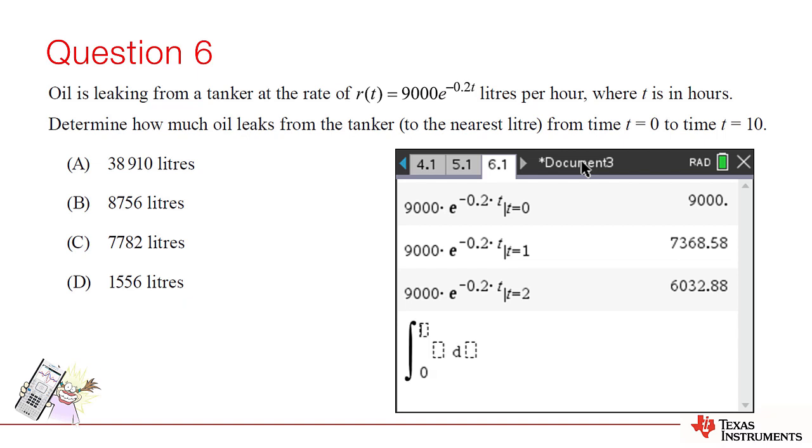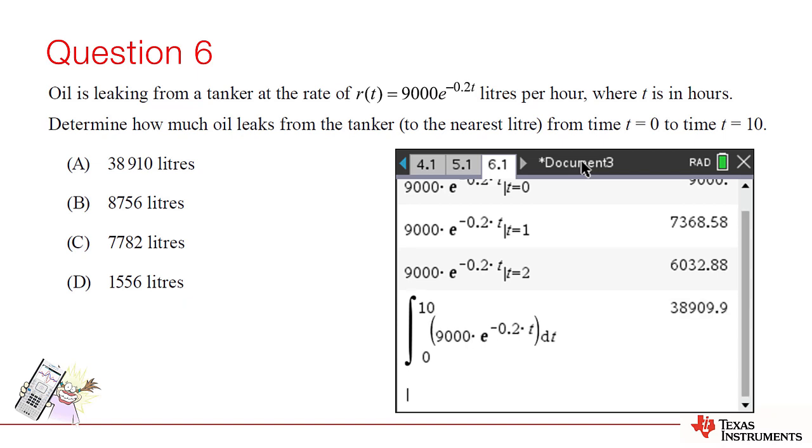Of course, we could use integration. In this case, we know that e to the power of negative 0.2t would be greater than 0, so there are no issues with our graph crossing the axis. Aside from which, it wouldn't make any sense for the oil to start going back into the tanker. So, we can simply integrate from 0 to 10 to find the volume of oil. And so we see the answer is option A.